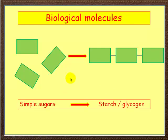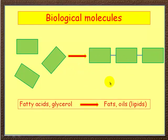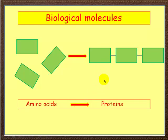Let's think about the building blocks. Carbohydrates consist of simple sugars, and when they combine they form starch and glycogen. So starch and glycogen are chains of simple sugars. Fatty acids and glycerol are the building blocks of fats and oils - they combine together to form fats and oils. And as mentioned, proteins are made up of amino acids.